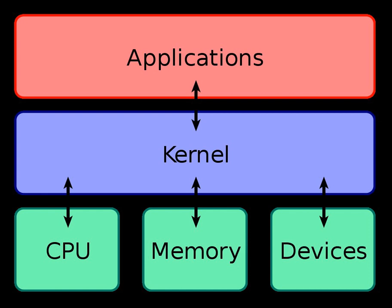In the Unix model, the operating system consists of two parts: first, the huge collection of utility programs that drive most operations; second, the kernel that runs the programs. Under Unix, from a programming standpoint, the distinction between the two is fairly thin — the kernel is a program running in supervisor mode that acts as a program loader and supervisor for the small utility programs making up the rest of the system, providing locking and I/O services for these programs. Beyond that, the kernel didn't intervene at all in user space.